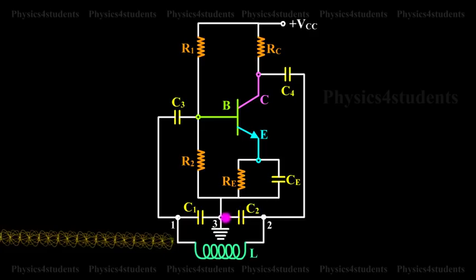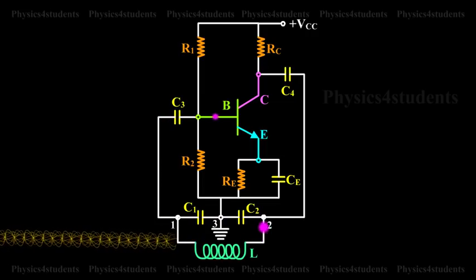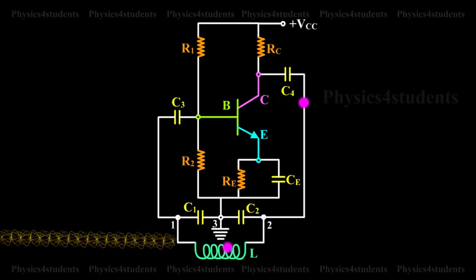When the collector supply voltage is switched on, a transient current is produced in the tank circuit and damped harmonic oscillations are produced. The oscillations across C1 are applied to the base-emitter junction and appear in the amplified form in the collector circuit.